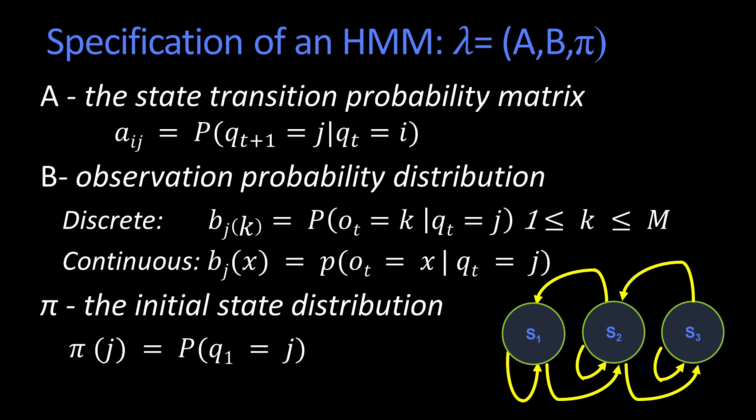Given the state, I can talk about the full specification of an HMM. And for whatever reason, HMMs are referred to as lambda. It's a triplet made up of three components that you've already seen. There's a state transition matrix. Those are the A's, the probability of going from one state at one time, given that you're at another state.